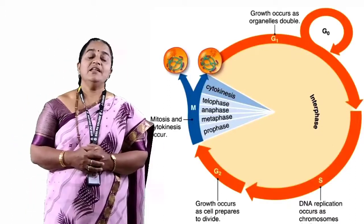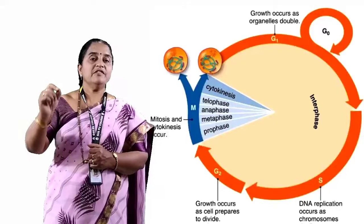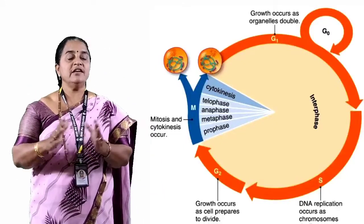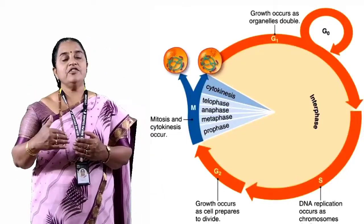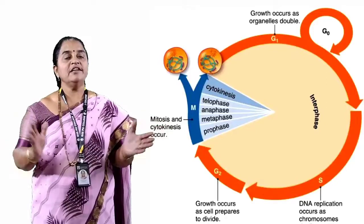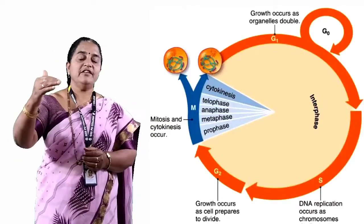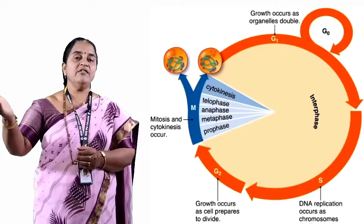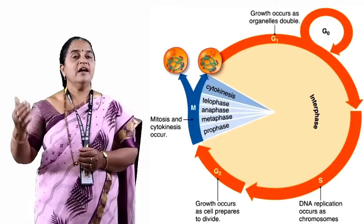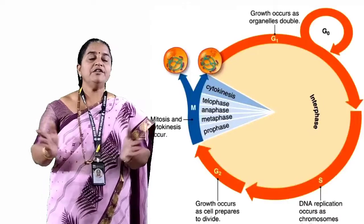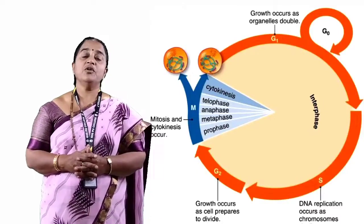In indirect type of cell division, first the nuclear composition is equally divided and then distributed equally to the resulting daughter cells. The first phase where nuclear components are divided equally is called karyokinesis, and then the equal division of the cytoplasmic components is called cytokinesis.